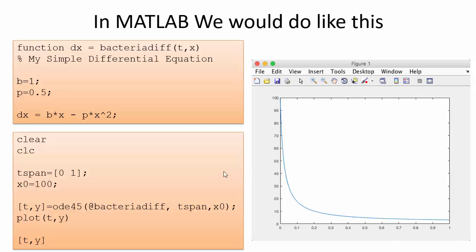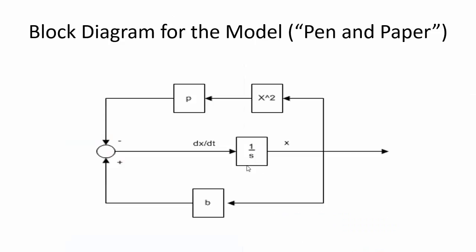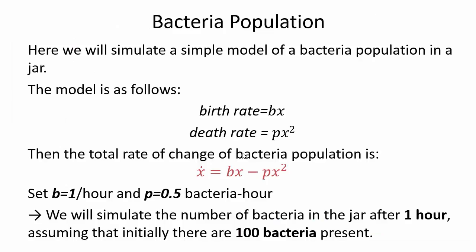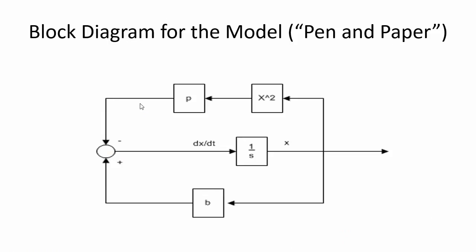To implement this in Simulink, we first need to create a block diagram for the differential equation — it's a good idea to sketch it on paper first. This is the block diagram for x-dot = bx - px².